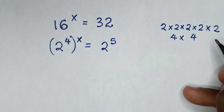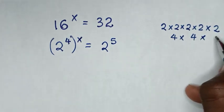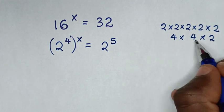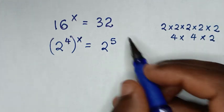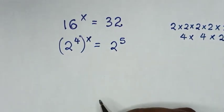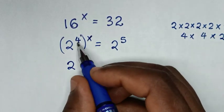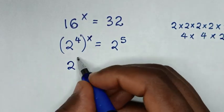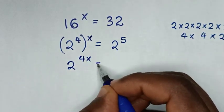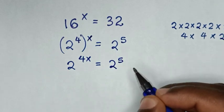So it will be 4 times 4, then times 2, as 16 times 2 is 32. Then in the next step, it will be 2 power of 4x, is equal to 2 power of 5.